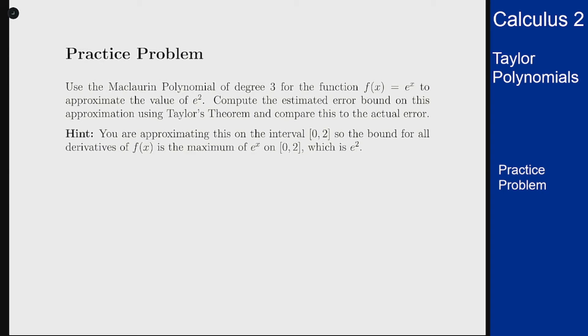In this problem we want to analyze using Taylor or Maclaurin polynomials to approximate the values of a function. We want to use the Maclaurin polynomial of degree 3 for the function f(x) = e^x to approximate the value of e squared. We want to find the error bound using Taylor's theorem and then actually compute the error to compare those two.